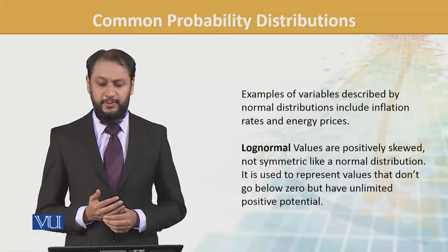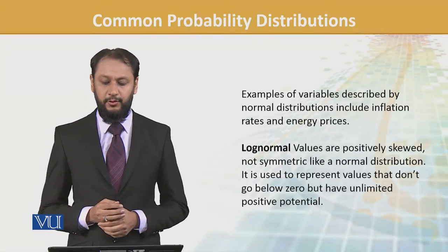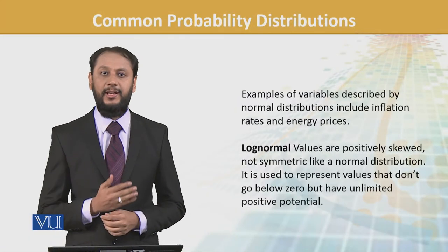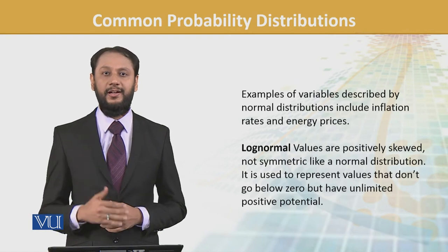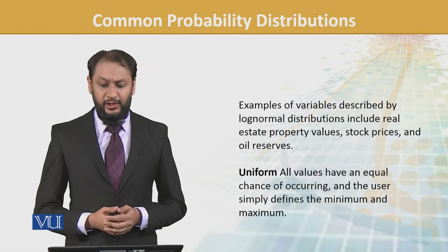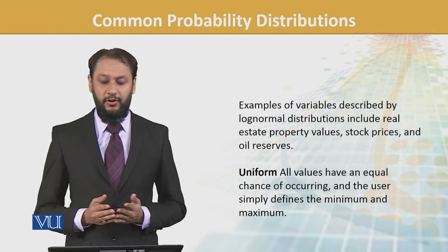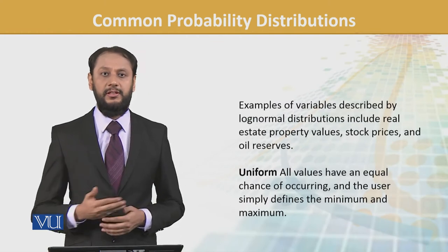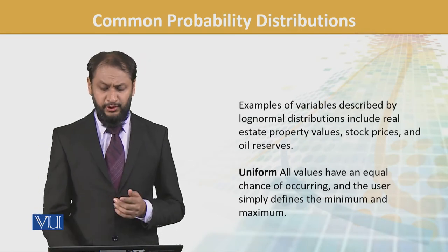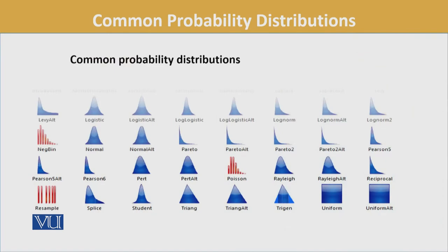It is used to represent values that don't go below zero but have unlimited positive potential — yani yeh negative mein nahin ja rahe aur upside bahut high hai. Toh iska graph ek side se bilkul halved hai and then the other side stretches out. Examples of variables include real estate, stocks, oil reserves — jinki unlimited movement ho sakti hai.